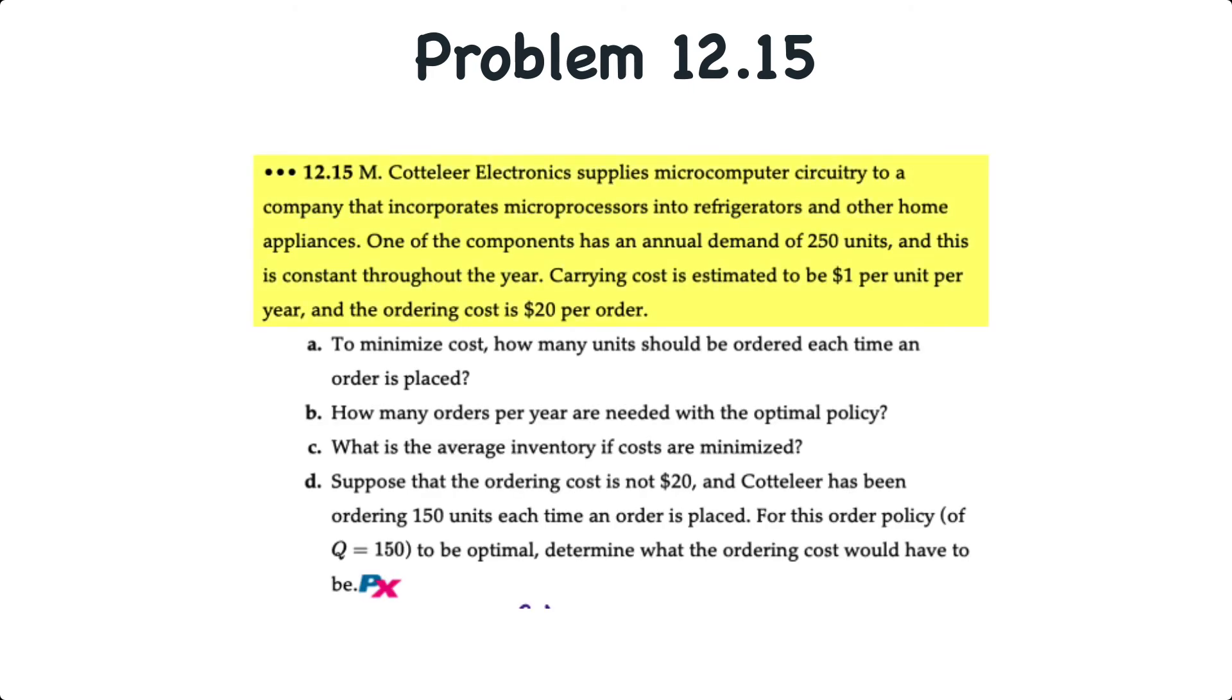Now we'll look at problem 12.15. Here we have a company that supplies microcomputer circuitry to a company that incorporates microprocessors into home appliances. One of the components has annual demand of 250 units, and it's constant throughout the year. The carrying cost is estimated to be $1 per year, and the order cost is $20 per order. We have four requirements here. The first is to minimize the cost and determine how many units should be ordered each time an order is placed. Requirement B is to determine how many orders per year are needed with the optimal policy. The third requirement C is to determine the average inventory if costs are minimized. And the last requirement is for an optimal order quantity of 150 units. What would the ordering cost have to be?